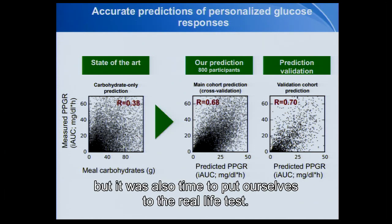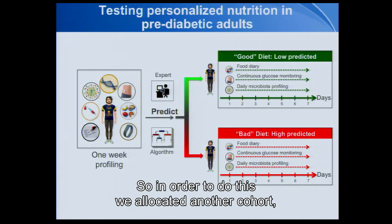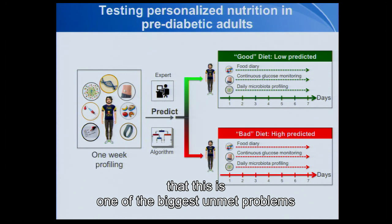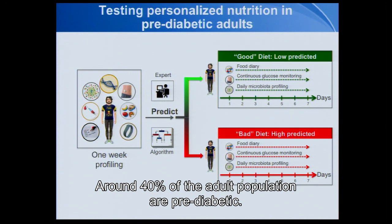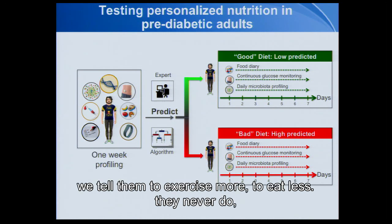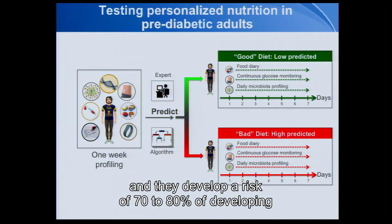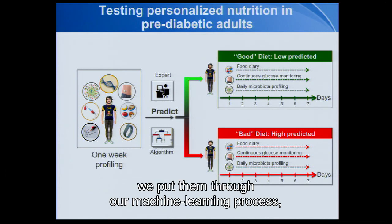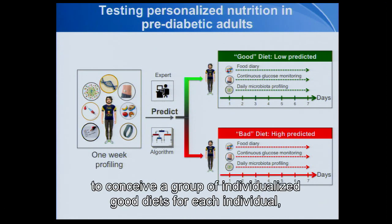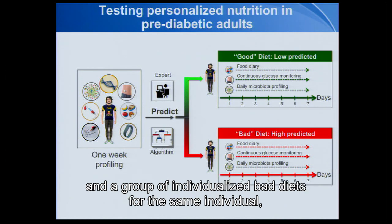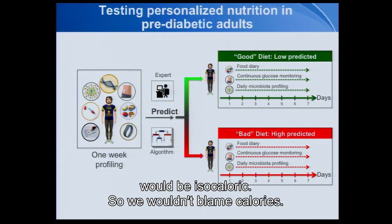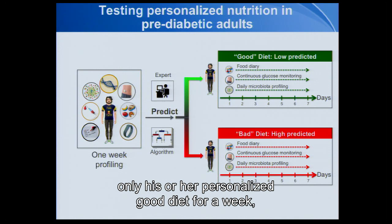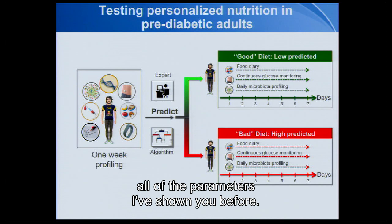We were very happy, but it was time to put ourselves to the real-life test. So we allocated another cohort, this time of pre-diabetic individuals. In the U.S., around 40% of the adult population are pre-diabetic, and as a clinician I can tell you they face a 70 to 80% risk of developing full-blown type 2 diabetes within the next decade. We took this group, put them through our machine learning process, and asked the algorithm to conceive a group of individualized good diets and individualized bad diets for each individual — isocaloric, so we wouldn't blame calories. Each individual was asked to eat only their personalized good diet for a week, then their personalized bad diet for another week, while we extensively measured them.